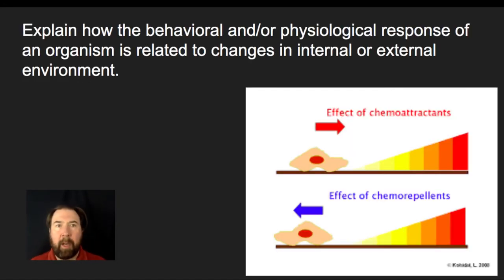I want to explain how the behavioral or physiological responses of an organism relate to changes in internal or external environment. The first thing to note is that there needs to be some sort of signal that comes and causes an organism to respond. This is found in everything from large multicellular organisms to individual single-celled organisms. The ability to receive a signal and then respond to that signal is something that we find in all living things.